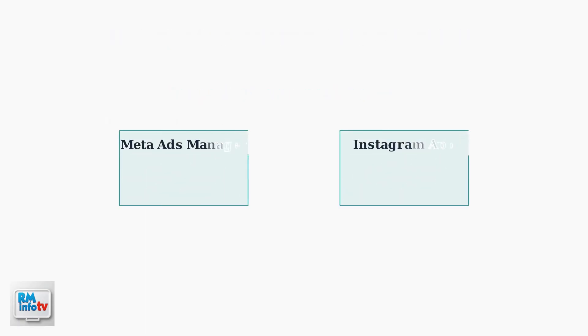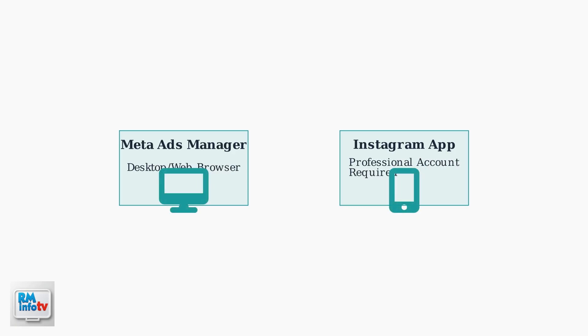There are two main ways to change your Instagram ad spending limit. You can use Meta Ads Manager on your computer, or adjust it directly through the Instagram app if you have a professional account. Let's start with the Meta Ads Manager method — this is the most straightforward approach and works from any web browser. First, open Meta Ads Manager and navigate to the Billing section.